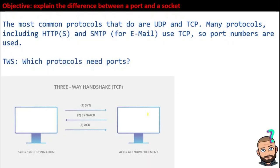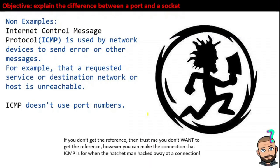So we have these protocols that need port numbers in order to work. Here are some non-examples of protocols that do not need port numbers but are still involved in network communication. The most famous one is ICMP, the Internet Control Message Protocol. This is used by network devices to send error or other messages. For example, if I'm trying to get to a server or reach a destination network, I need to know if it's unreachable. Or I could be sitting there all day waiting for no reason. The ICMP message doesn't need to use port numbers.